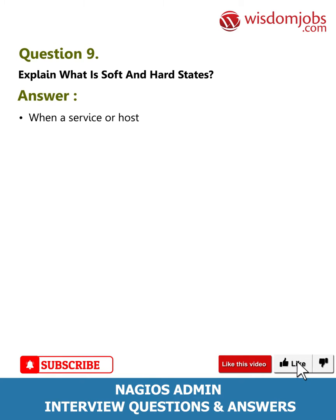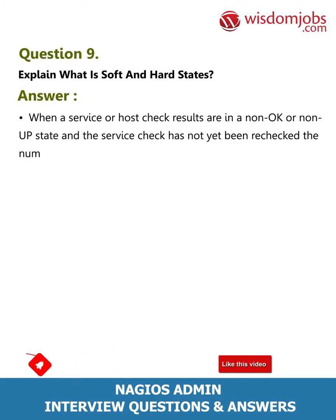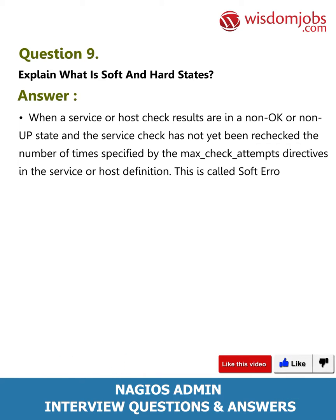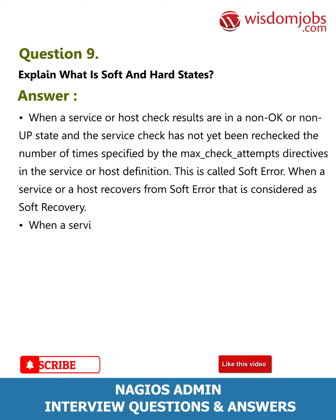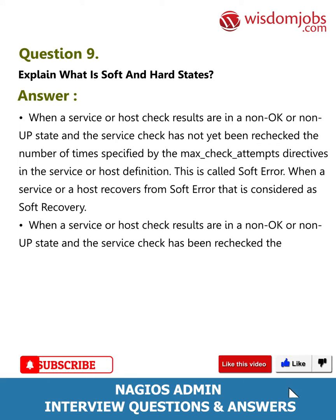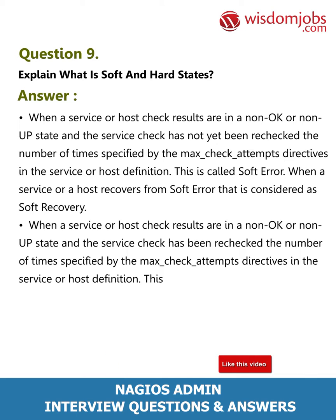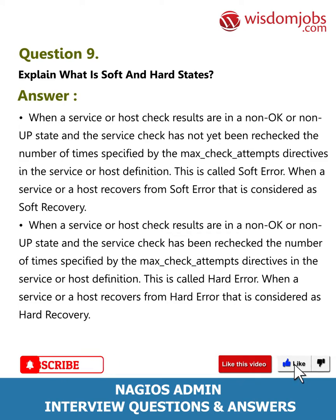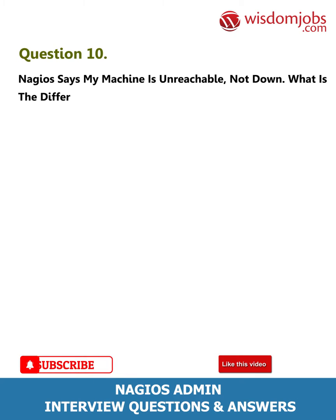Question 9: Explain what soft and hard states are. Answer: When a service or host check result is in a non-OK or non-up state and the service check has not yet been rechecked the number of times specified by the max_check_attempts directive in the service or host definition, this is called a soft error. When a service or host recovers from a soft error, that is considered a soft recovery. When the check has been rechecked the number of times specified by max_check_attempts, this is called a hard error. Recovery from a hard error is considered a hard recovery.